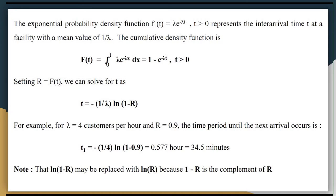For the exponential probability density function f(t) = λe^(−λt) for t > 0, which represents the arrival time t at a facility with mean value 1/λ, the cumulative density function is F(t) = ∫₀ᵗ λe^(−λx) dx = 1 − e^(−λt) for t > 0. Setting our random sample number r equal to F(t) and solving for t, we get t = −(1/λ) × ln(1 − r). For example, with λ = 4 customers per hour and r = 0.9, the time until the next arrival is t1 = −(1/4) × ln(1 − 0.9) = 0.577 hours = 34.5 minutes.